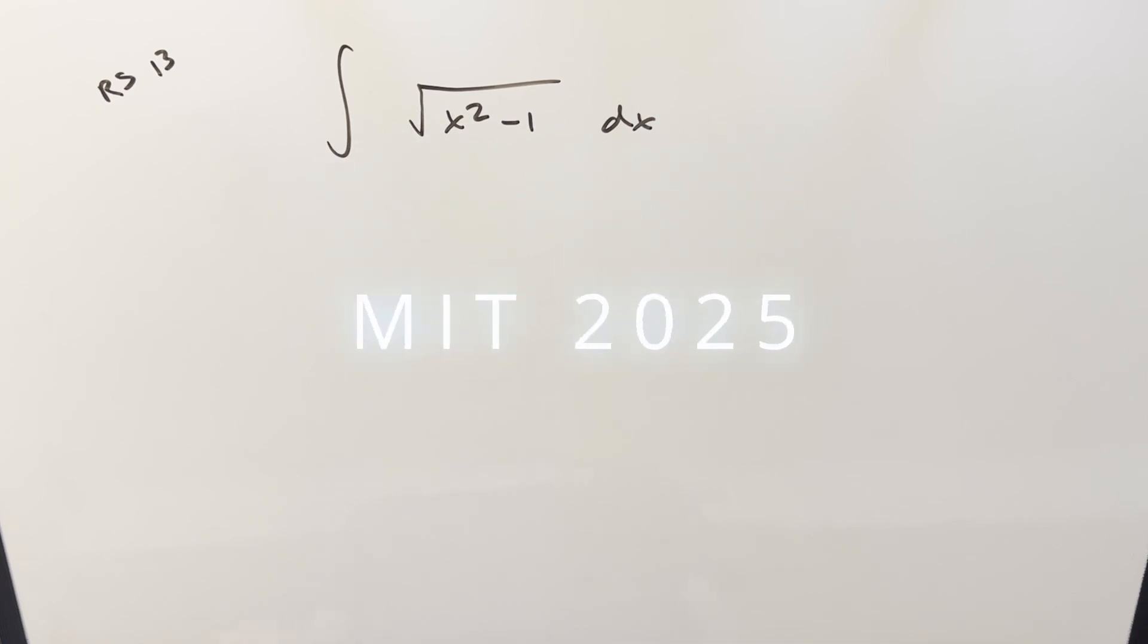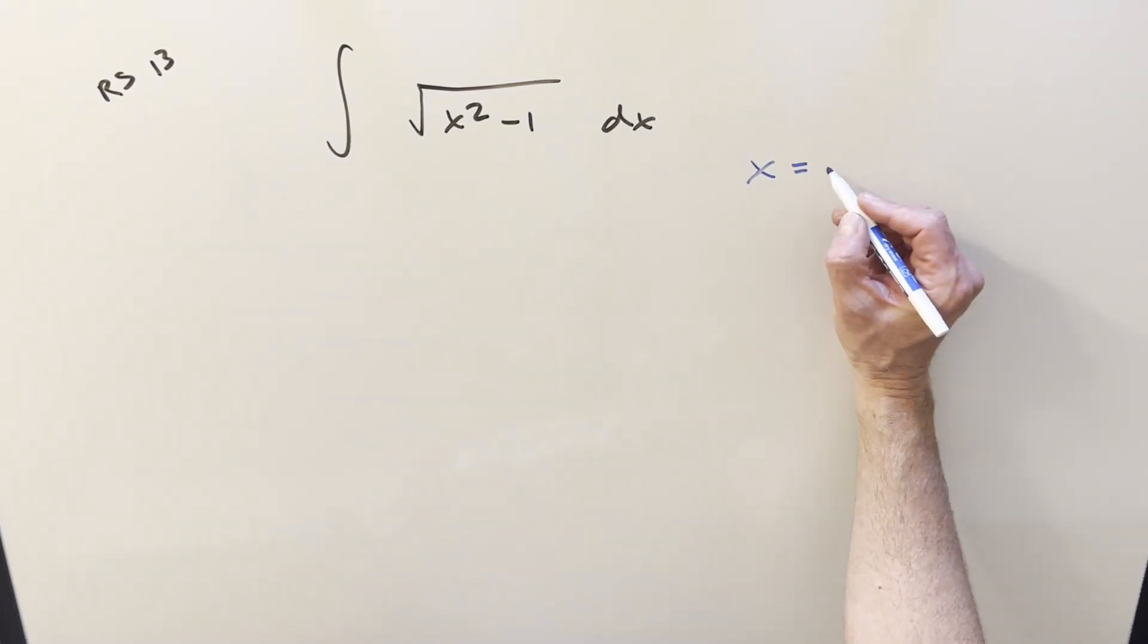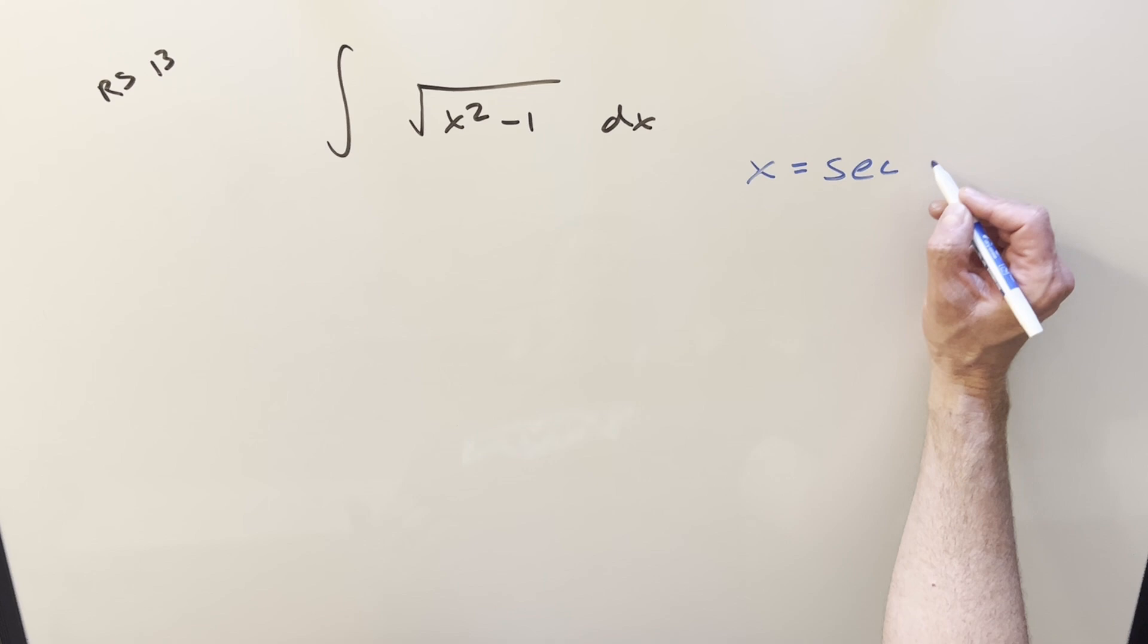We've got another integral from MIT 2025, regular season 13. We have the integral of square root of x squared minus 1 dx. It's kind of crazy how plain this looks. It feels like a very routine integral that you'd get in class, but let's just see if I can do it using straightforward methods.